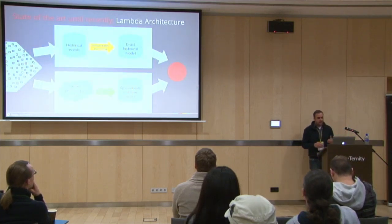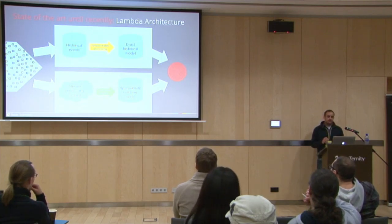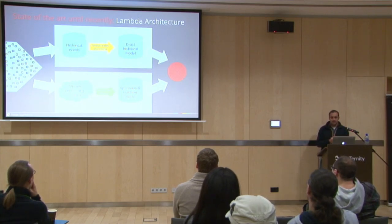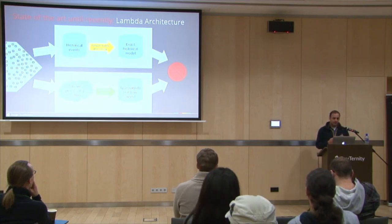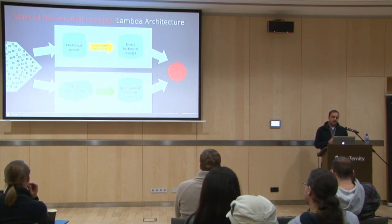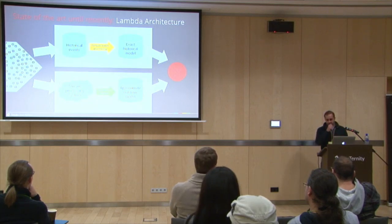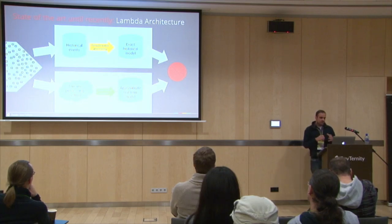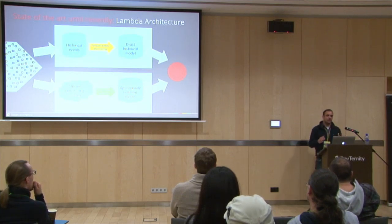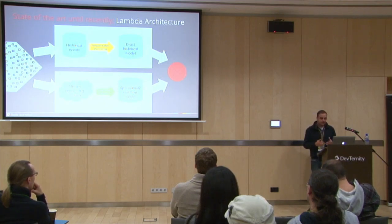What you can do is split your data into two parts. In the first part, you do regular batch processing and get exact results at the end of the day, week, or month. In the other branch, you do stream processing — as data comes in, you process it and get approximate results. This is the Lambda architecture, and it works. But as a software engineer, I don't like it, because instead of dealing with one system I have to deal with two systems — batch people, stream people — it just makes things more complicated.